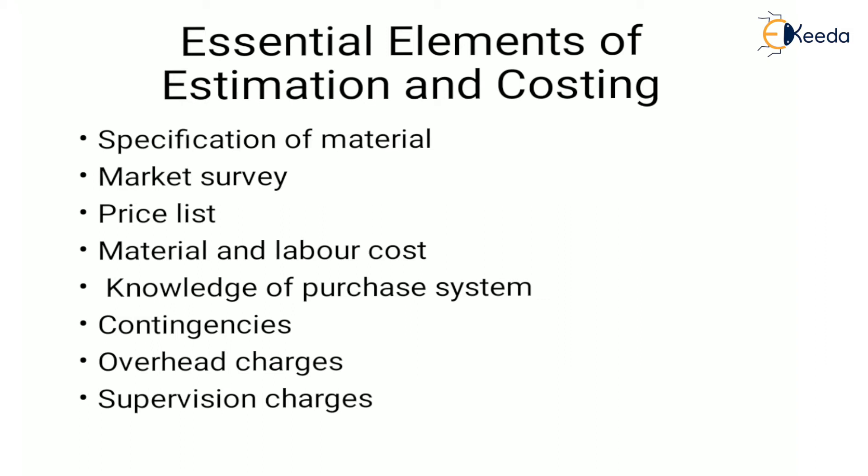Next is material and labor cost. The best way to determine material cost is to prepare a detailed material and cost list. For example, it should consist of the name of the item with specification, required quantity, rate, and total cost.